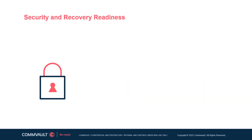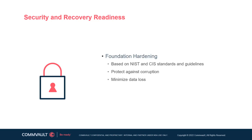The security offering can be described by the following categories: foundation hardening, application hardening, ransomware protection, data isolation (also known as air gapping), and recovery readiness. Starting with foundation hardening, the core components of the Commvault platform rely on the underlying operating system, database, application, and web server technologies. Commvault provides validated and fully documented hardening configurations based on NIST and CIS standards to help protect against corruption and minimize data loss.